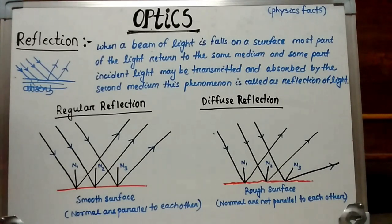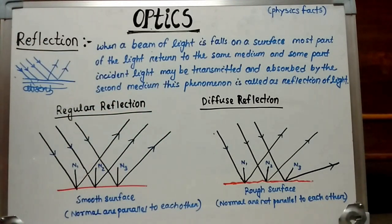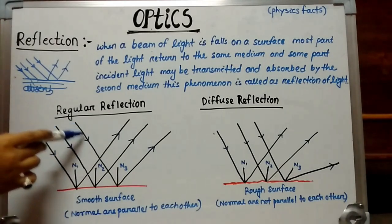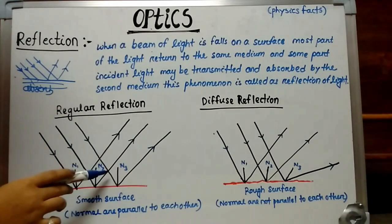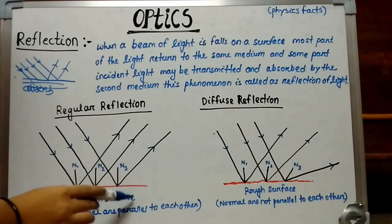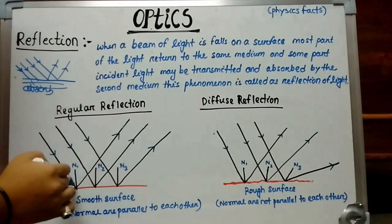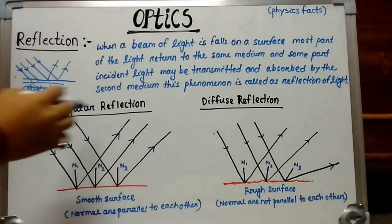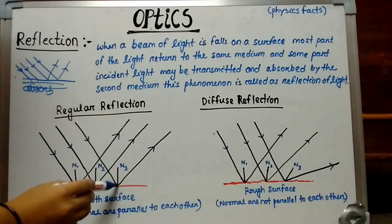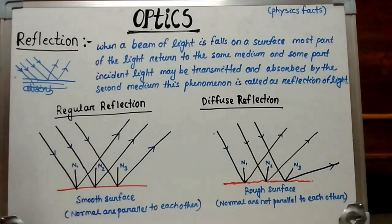Reflection is of two types: regular reflection and diffuse reflection. In regular reflection, if we take a parallel beam of incident light and it hits a smooth surface, the reflected rays are also parallel to each other. At the point of incidence, if we draw normals, these normals are also parallel to each other. This type of reflection is known as regular reflection.